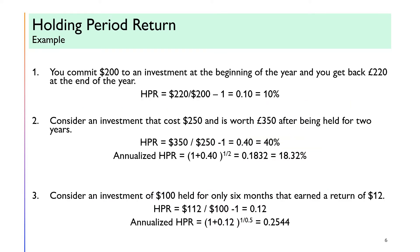There are three examples here. The purpose of this exercise is to calculate the holding period return for holding periods of 1 year, 2 years, and 6 months. For questions 2 and 3, calculate the annualized holding period return. Please try on your own first, then compare your working with the given answers. Happy trying!